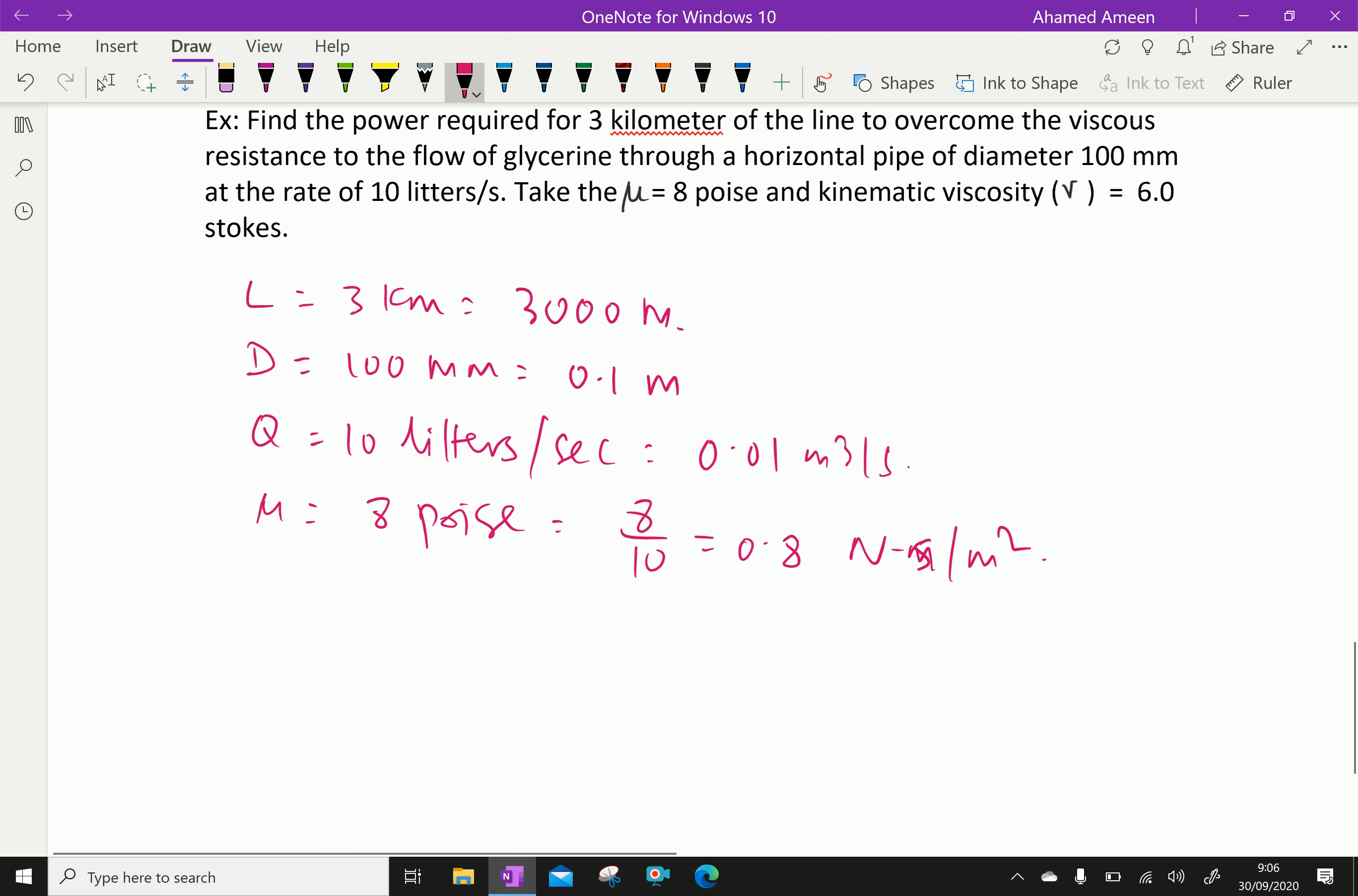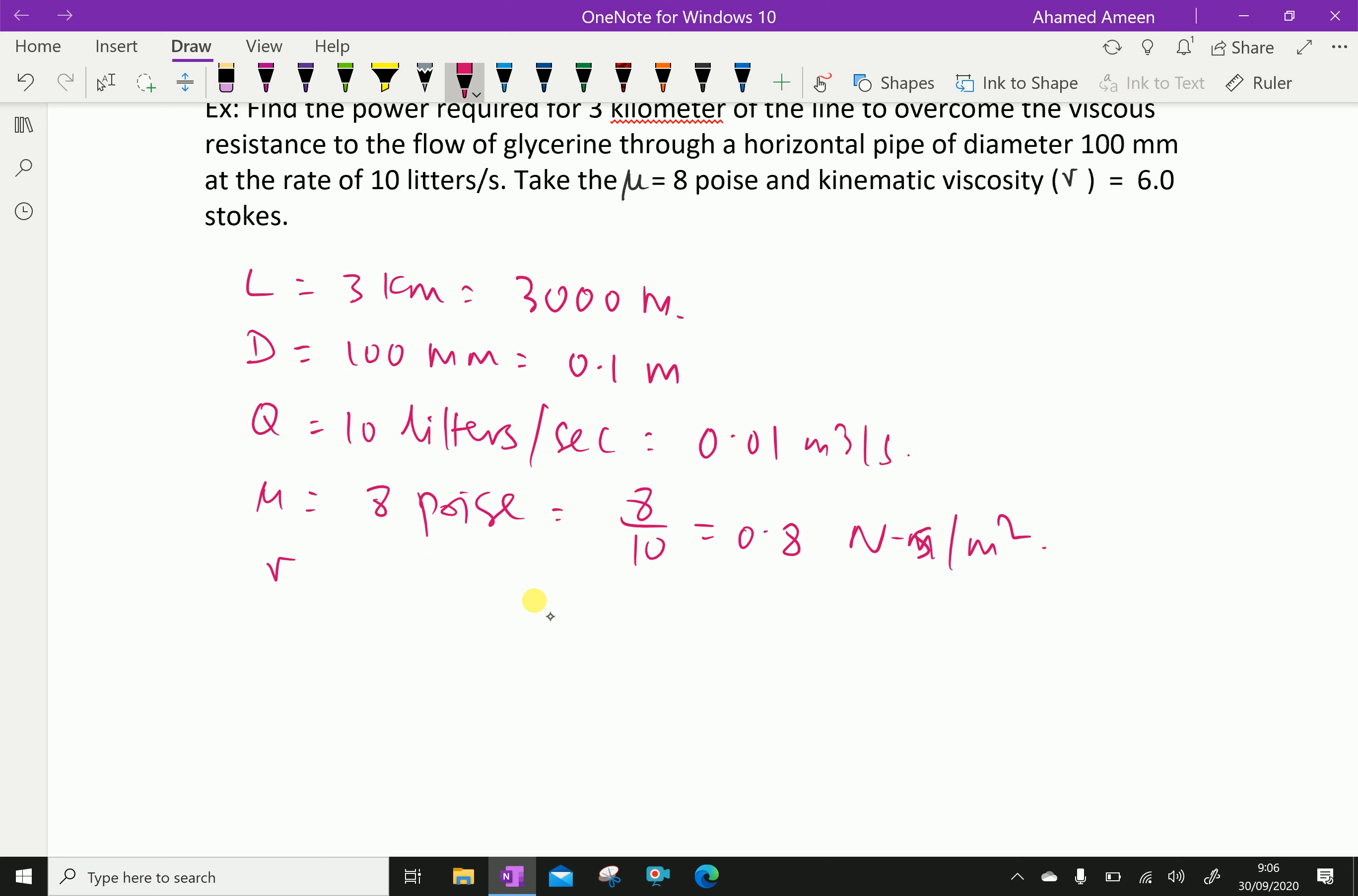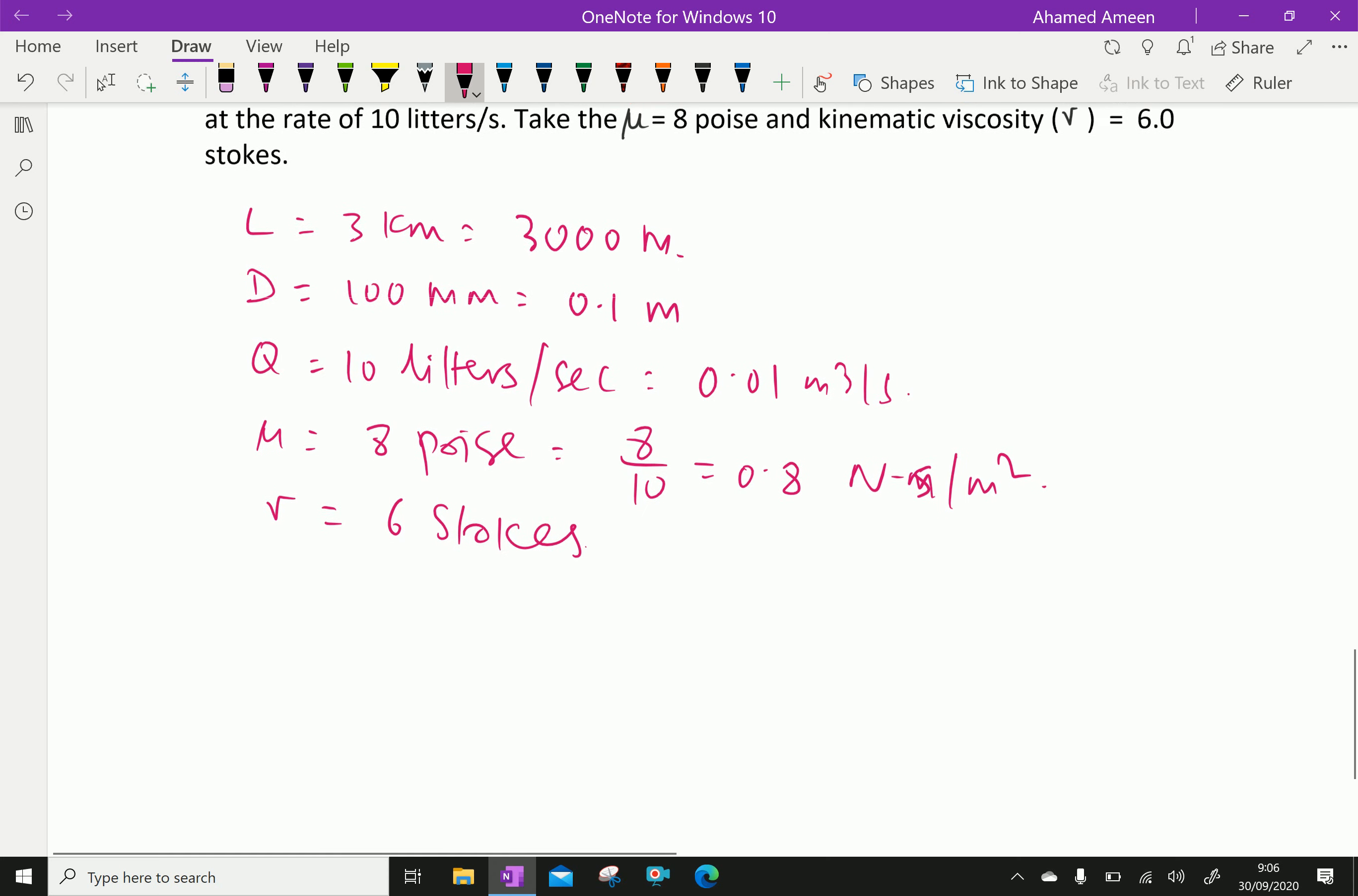Then kinematic viscosity equal 6 stokes which is equal 6 centimeter square per second which is equal 0.0006 meter square per second.